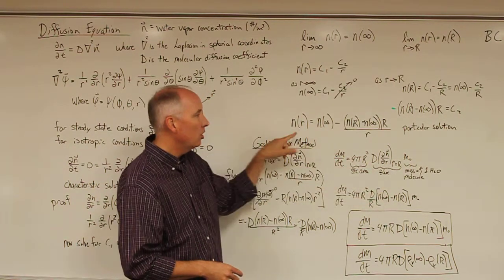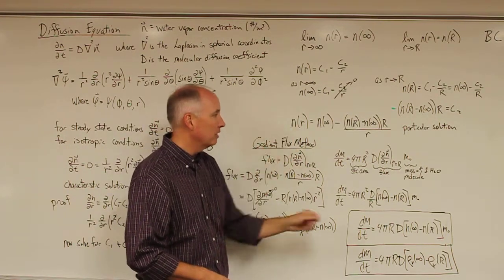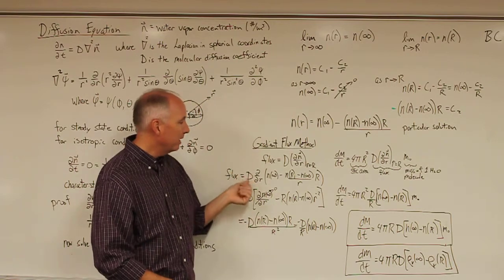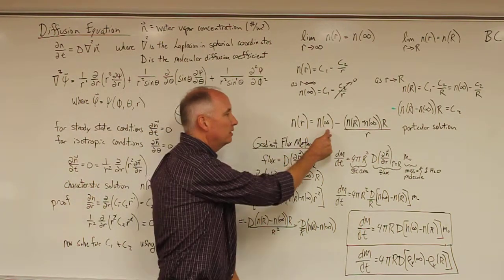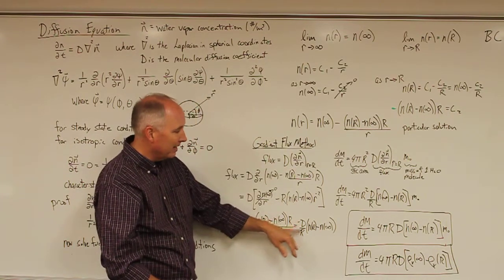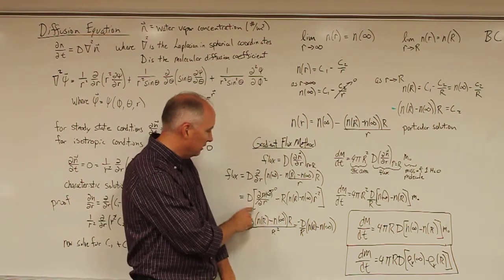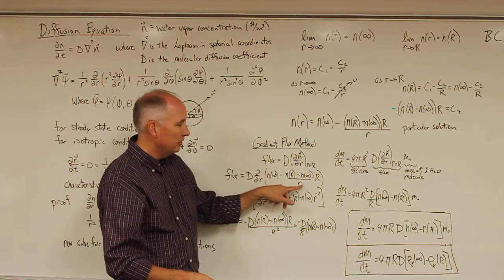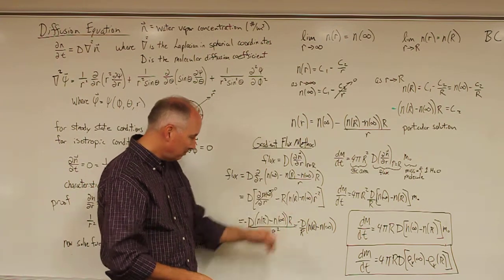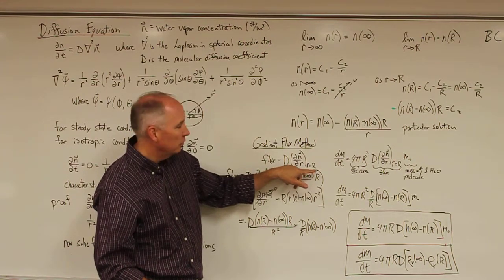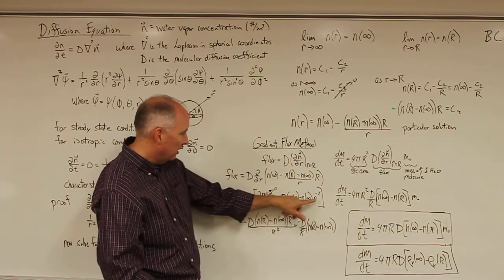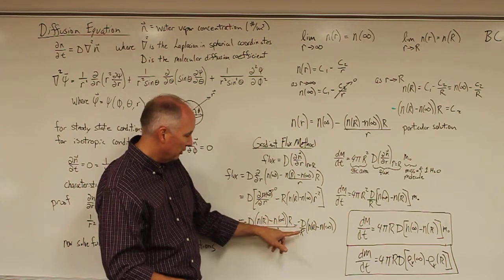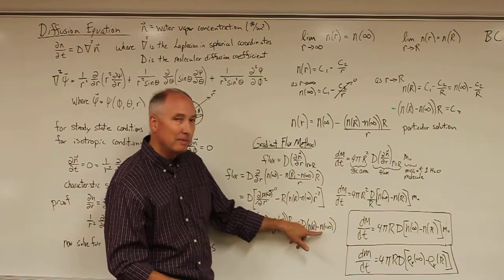Now that we know the particular solution for the water vapor concentration, we can explicitly calculate its gradient. Taking the partial with respect to r of that particular solution: the derivative of the constant is zero, and the term with r in the denominator gives minus r to the minus 2. Evaluating at r equal to the droplet radius R, one of the r's cancels, leaving minus D over R times (n(R) minus n(infinity)).